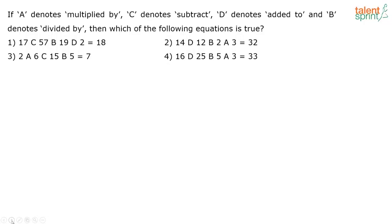If A denotes multiplied by, C denotes subtract, D denotes added to, and B denotes divided by, then which of the following equations is true? Such questions you just have to go with the trial and error method. You have to check for each option which is the correct option which has the right equation.